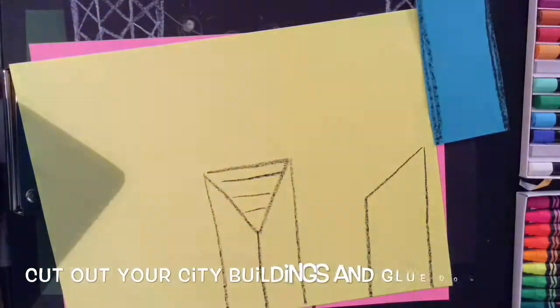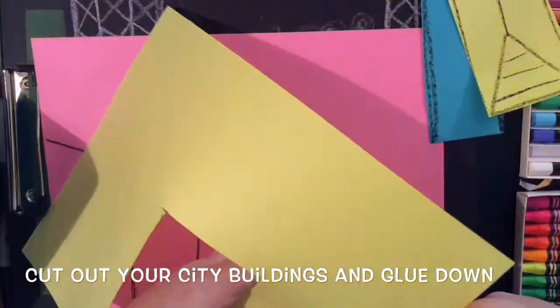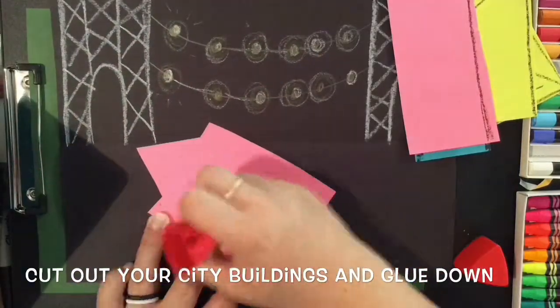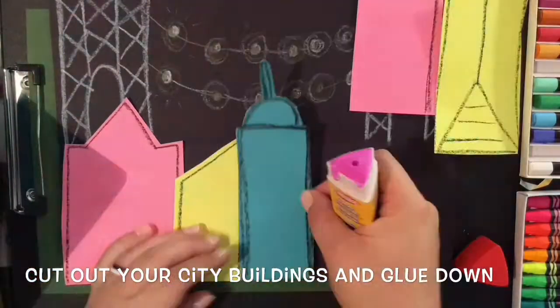Once you have about six or seven buildings, go ahead and cut them out, and you're going to glue them on the bottom half of your black paper.